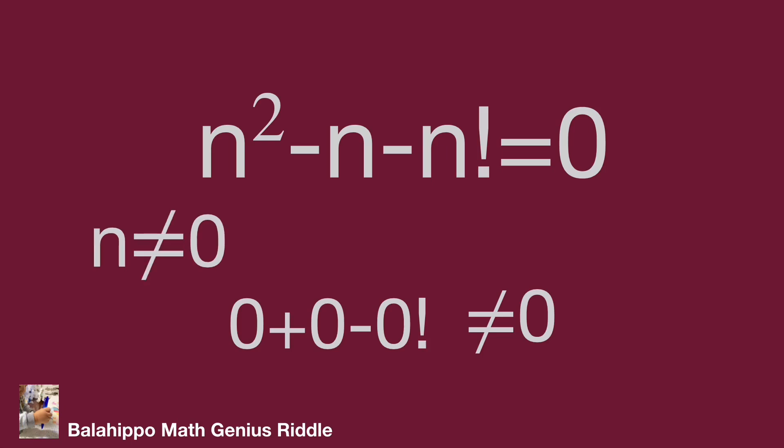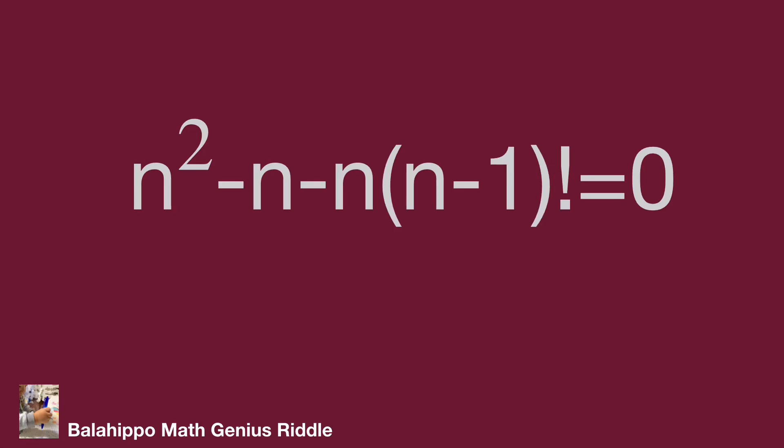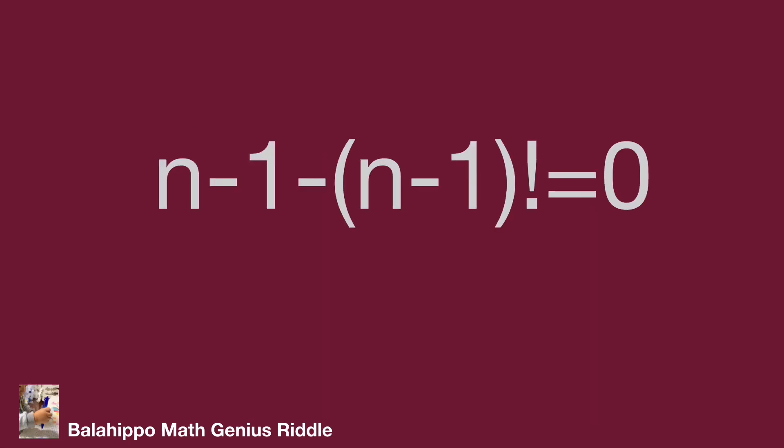Since n is not zero, we rewrite n factorial as n times (n minus 1) factorial. Now all three terms in the equation share a factor of n. Because n is not equal to zero, we can divide the entire equation by n, giving us: n minus 1 minus (n minus 1) factorial equal to zero.